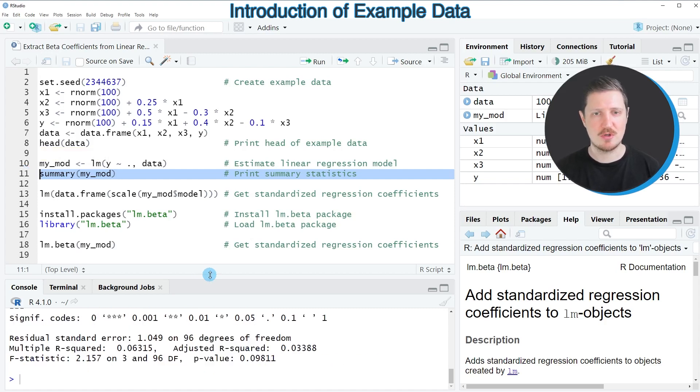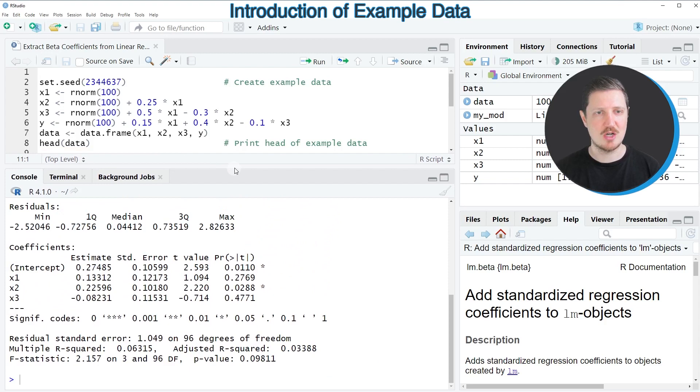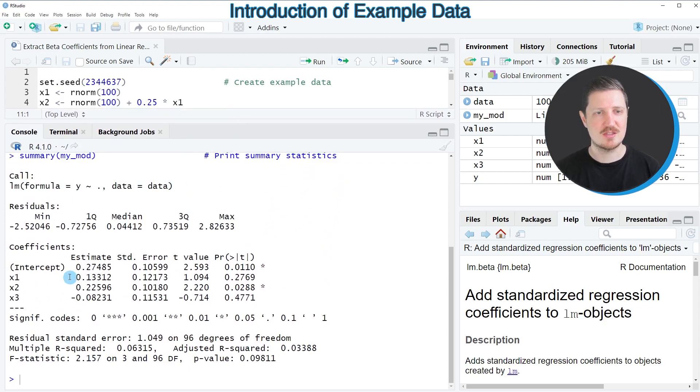So after running line 11 of the code you can see a summary output at the bottom in the RStudio console. So this summary output already shows certain information about our model, however it does not show our standardized regression coefficients yet.